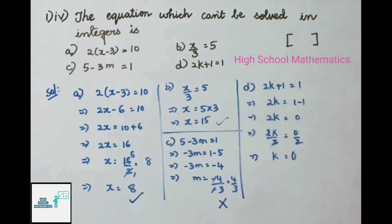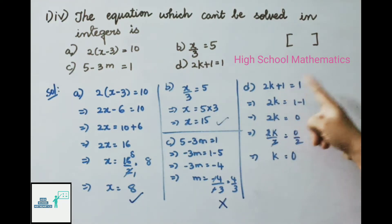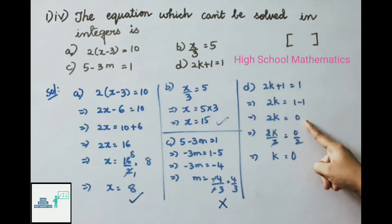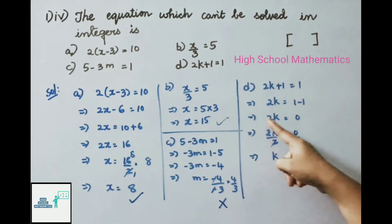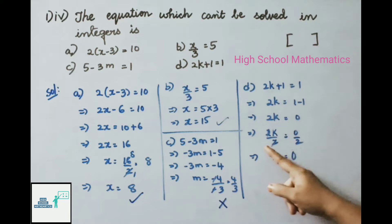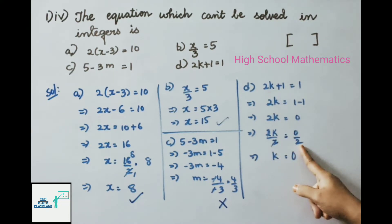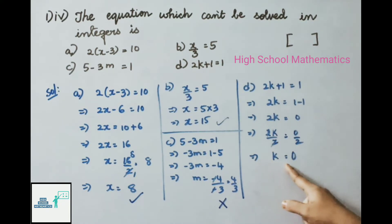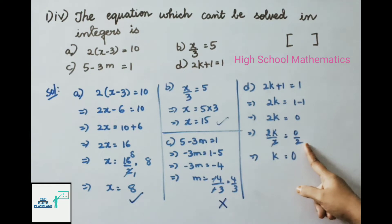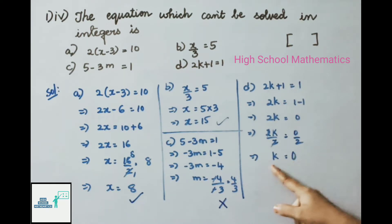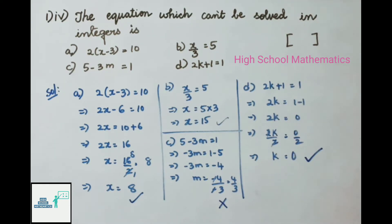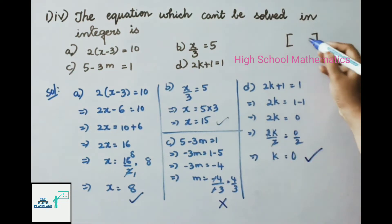Fourth equation: 2k + 1 = 1 → 2k = 0 → k = 0, and 0 is also an integer. So the equation which can't be solved in integers is option C: 5 - 3m = 1.